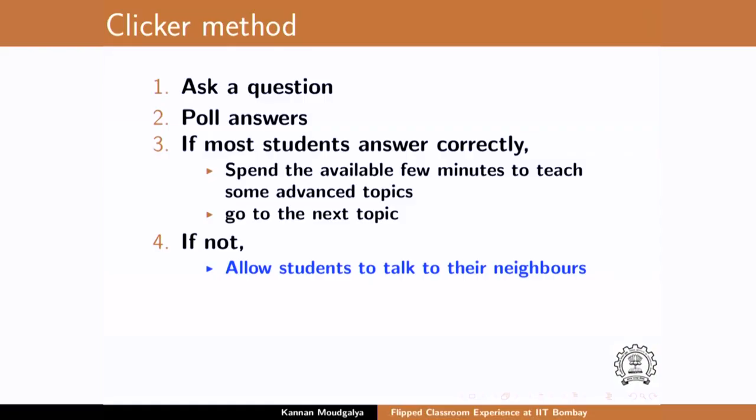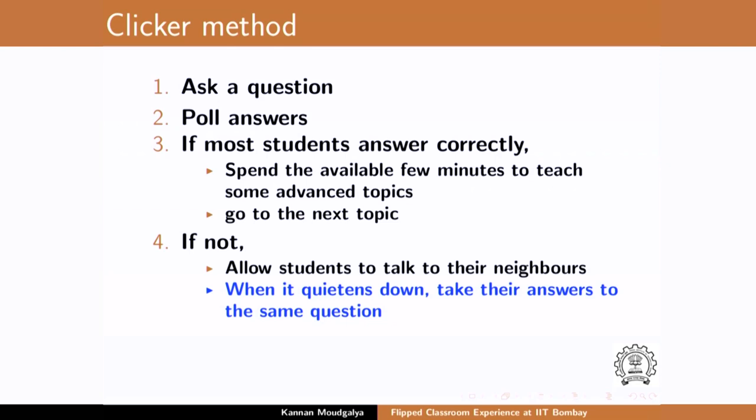I thought I had explained it and everybody nodded, but they had not understood. In that case, allow the students to talk to their neighbors. Because you see A, B, C, D all equal — only one is correct. Then they will talk to each other, including those who guessed it. They know who knows the answer. It will be noisy for a while, afterwards it becomes quiet. Then you know they have done the discussion. Then you do the poll again — and most of the time, almost 90 percent of the time, they got it right. The person who knew the answer would have convinced them.